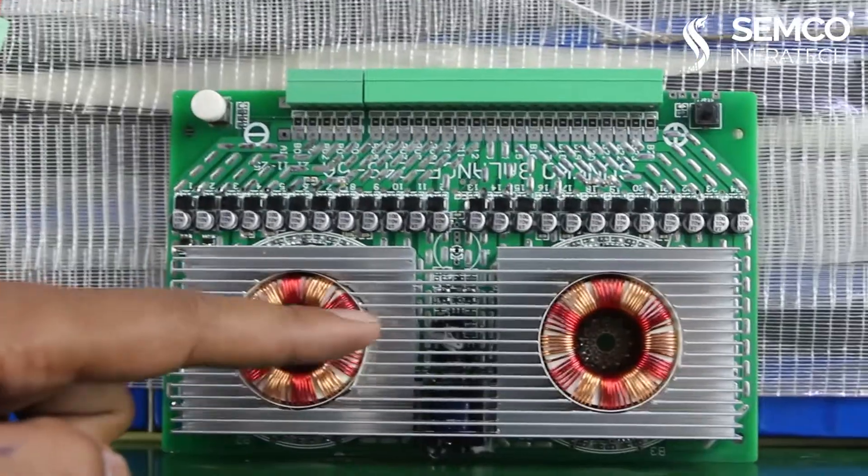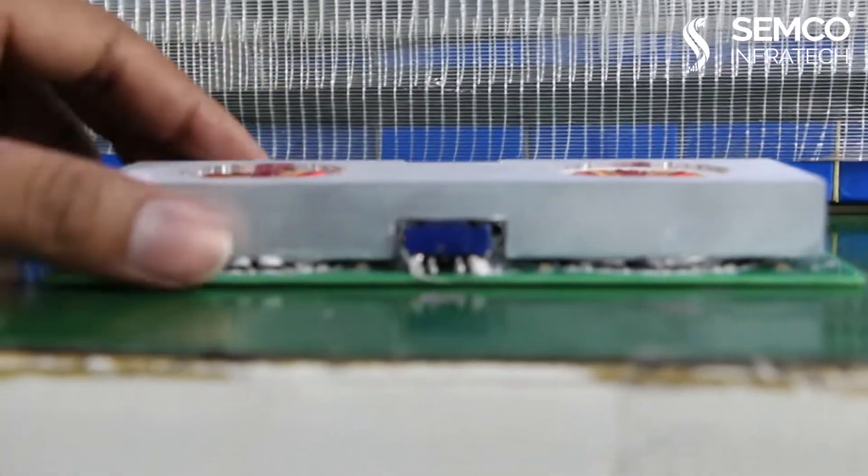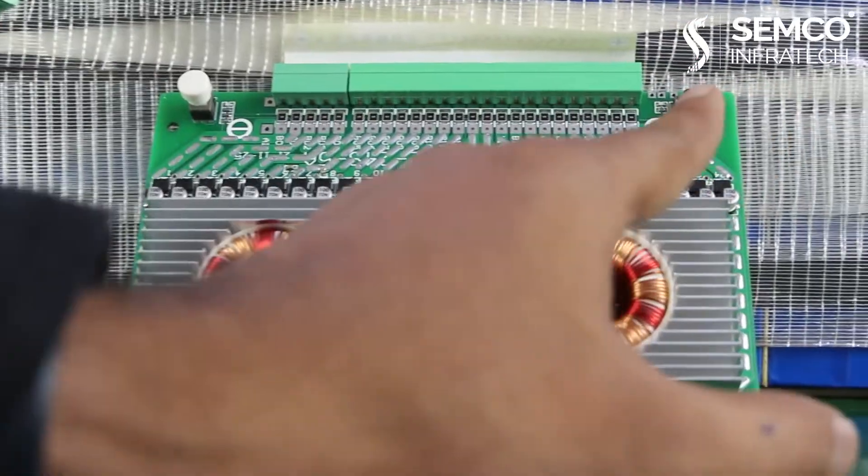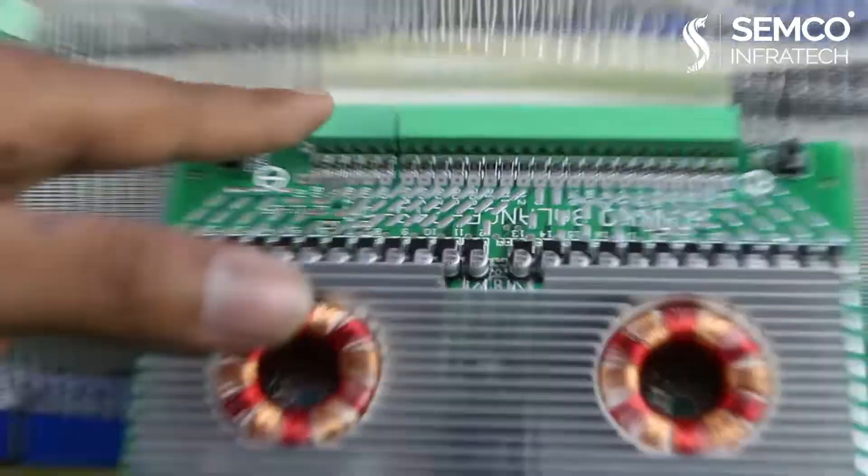This is the active balancer transformer base. Here you can see the transformer, and this is the on-off switch. This is for start for equalizing, and this is for the connections.